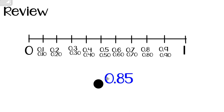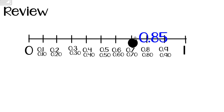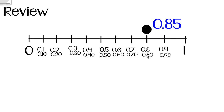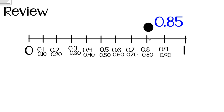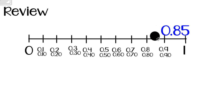For example, with 0 and 85 hundredths, I notice it has 8 tenths, so I start near 8 tenths, which equals 80 hundredths. I know it's a little bit more. Between each tenth there are 10 hundredths, so I can count: 81, 82, 83, 84, 85 hundredths. So I plot 85 hundredths halfway between 8 tenths and 9 tenths, or halfway between 80 and 90 hundredths.